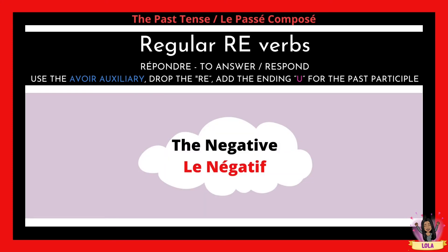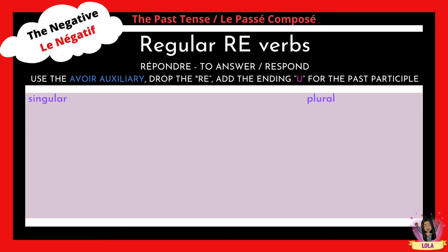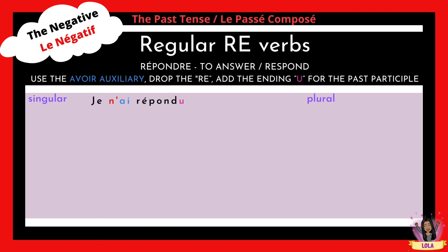Now let's take a look at the negative. To make a sentence negative we need to add ne and pas. We'll look at the singular first. We already know j'ai répondu means I answered. To make it negative, ne goes before the auxiliary ai and pas goes after it. It's n'apostrophe because ai starts with a vowel. So je becomes je n'ai, giving us je n'ai pas répondu: I did not answer.